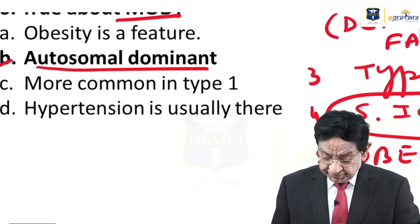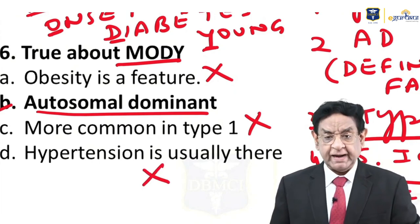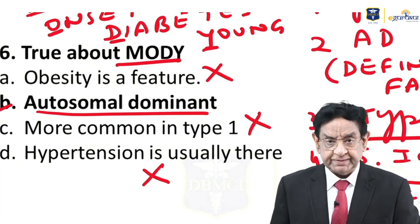In MODY, obesity is not a feature, it is type 2 diabetes, and hypertension is not a feature either. We are now very clear about MODY — it is non-obese, autosomal dominant, type 2 diabetes with reduced serum insulin.